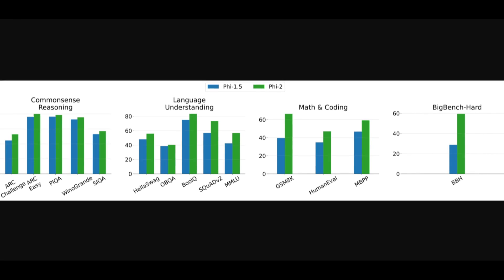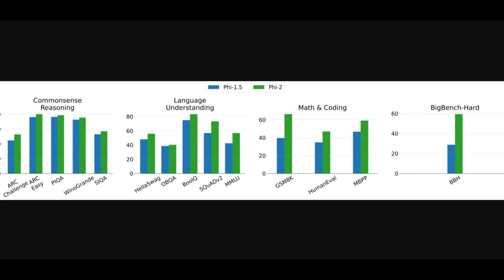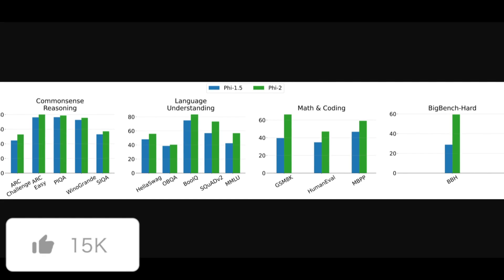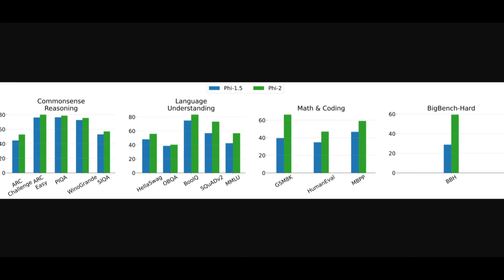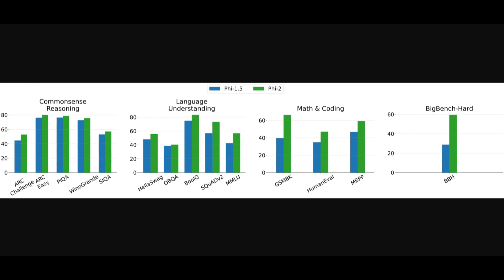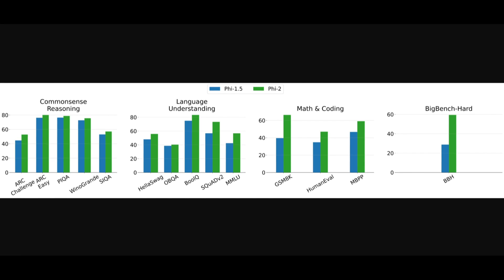The Phi models, particularly Phi-2, aimed to match the performance of much larger models through two strategic approaches. The first was quality training data. The quality of training data is crucial for model performance. The team focused on using textbook quality, emphasizing common sense reasoning and general knowledge. They created synthetic datasets and selected web data based on educational value and content quality, making sure the quality they used in the training data was the best of the best.